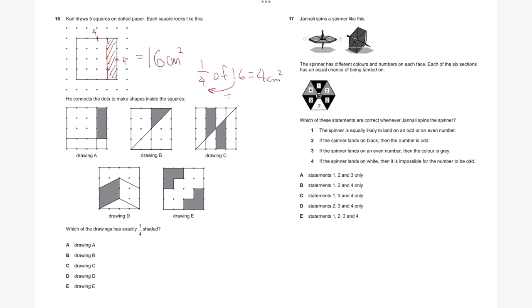Diagram A has three squares — can't be A. Diagram B has two connected — only two, can't be B. Drawing C has five — too much. Drawing D has one, two, three, four — exactly four squares shaded. Drawing E has six — too much. So only drawing D has exactly one quarter shaded. The answer to question 16 is D. Once you work out the area and calculate one quarter, you can solve your way through each option.